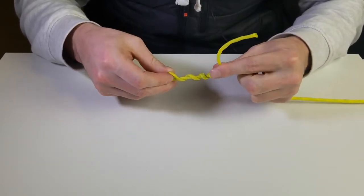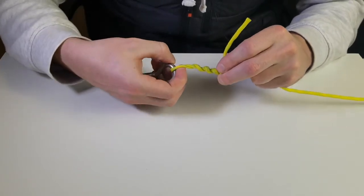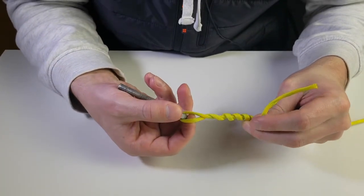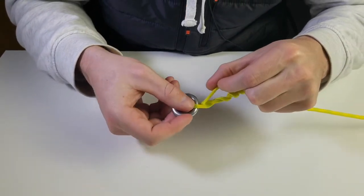Now all you're going to do is take this tag end here and go back through the very first loop. You see there's going to be a loop right here - you're simply just going to take your tag end and put it through the loop.